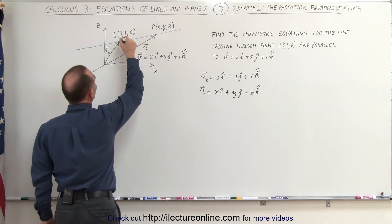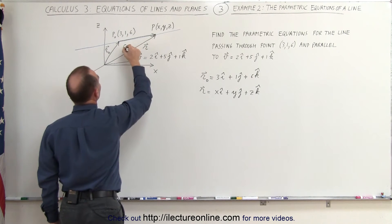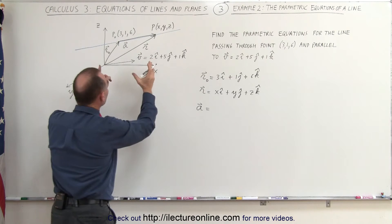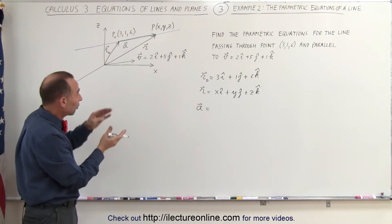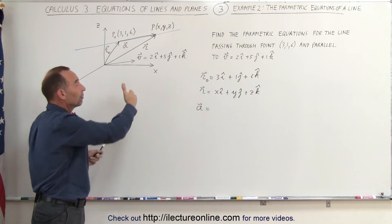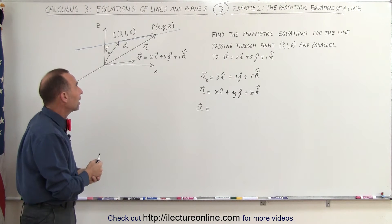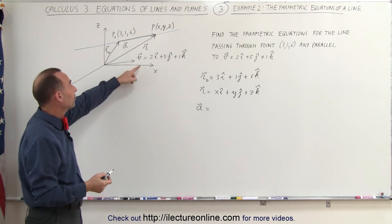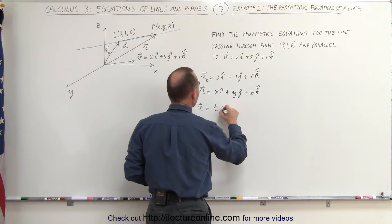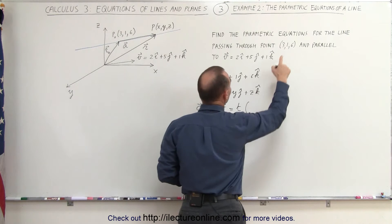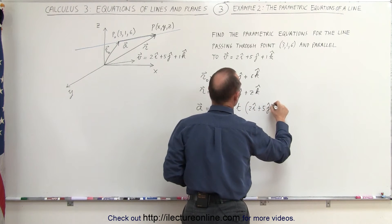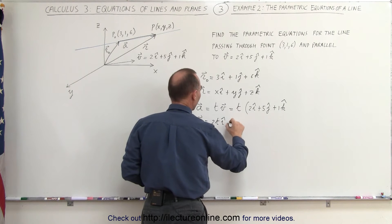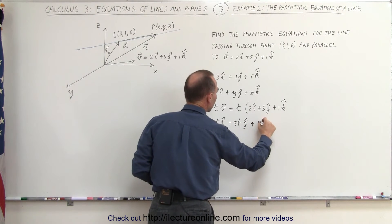Now we define the vector a, which runs from the known point to the arbitrary point. We can write that vector a is going to be equal to some parameter times the v vector, because the a vector and the v vector are parallel to one another. We can equate the two by multiplying the vector v by some parameter t. So a equals t times vector v, which is t times (2i + 5j + 1k), meaning the a vector is 2t in the i direction, plus 5t in the j direction, plus 1t in the k direction.